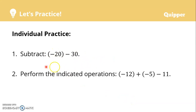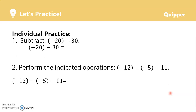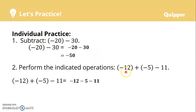You can practice these in your notebook. Number 1: subtract negative 20 minus 30. Number 2: perform the indicated operations — negative 12 plus negative 15 minus 11. Pause the video and answer in your notebook, then check the answers. For number 1, the answer is negative 50. For number 2, the answer is negative 28.